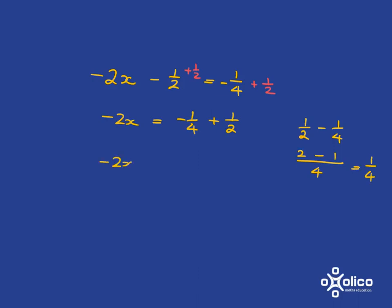So we've got negative 2x is equal to 1 over 4. Now we need to get rid of that negative 2, and it's negative 2 multiplied by x, so we need to divide, and so on this side, we need to divide by negative 2.